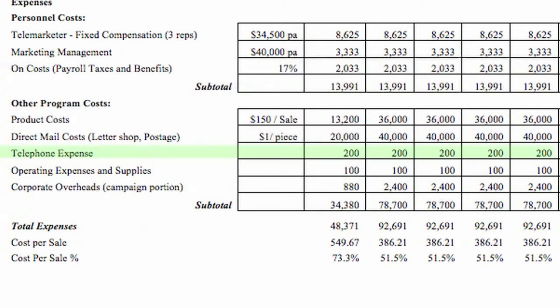Telephone costs can be a little tricky to figure out, particularly if you're running a number of campaigns using the same toll-free number as part of your call to action. You should figure out with your finance department a cost per call. A simple way is to estimate the average time in minutes your staff will be on a sales call, multiply that by the phone plan cost per minute, and then multiply it again by 1.5 just to be on the safe side.